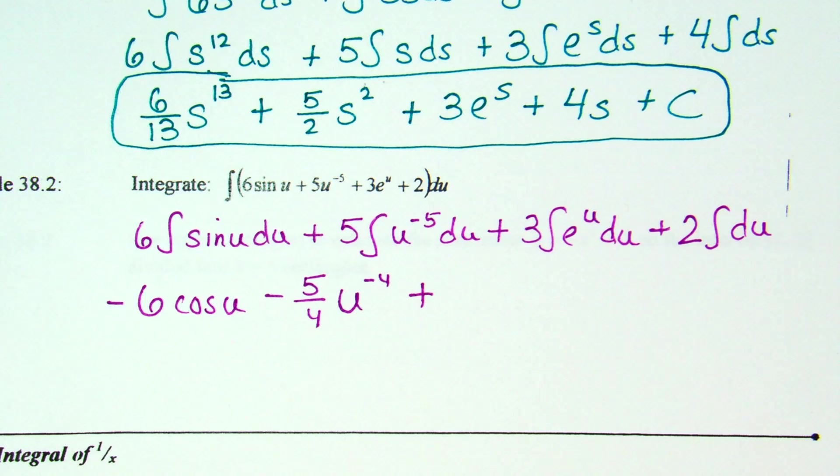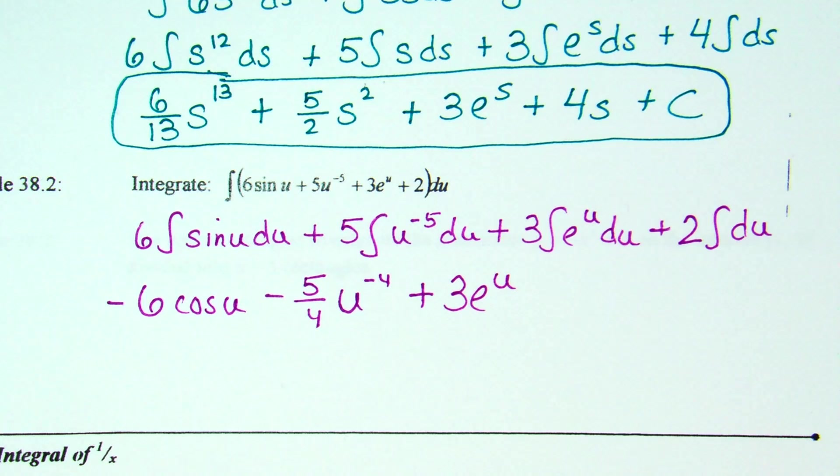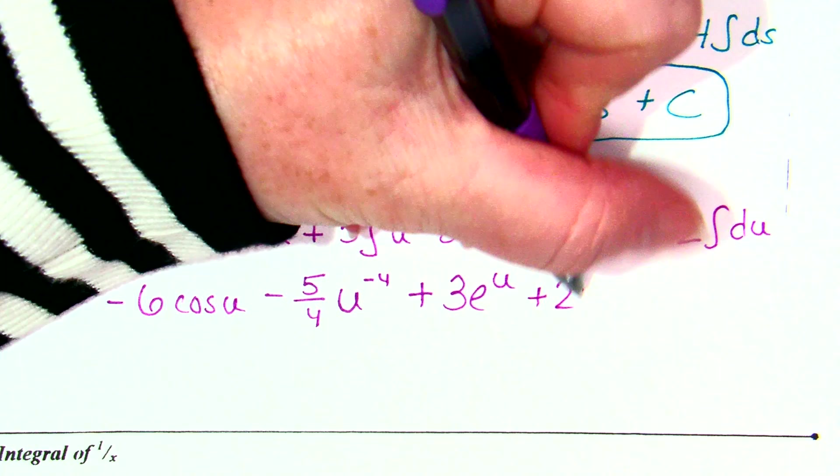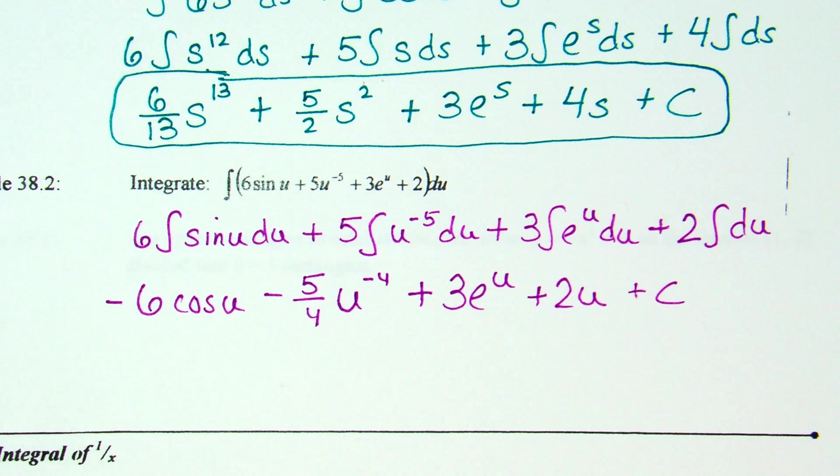So integral of e to the u stays the same. So 3 e to the u. 2 times the integral of du. Or, in other words, what's the integral of 2? 2u. Plus C. I was waiting on it. I thought you were at a circle. I was getting ready to circle it with the idea of I'm waiting for someone to think about the plus C.